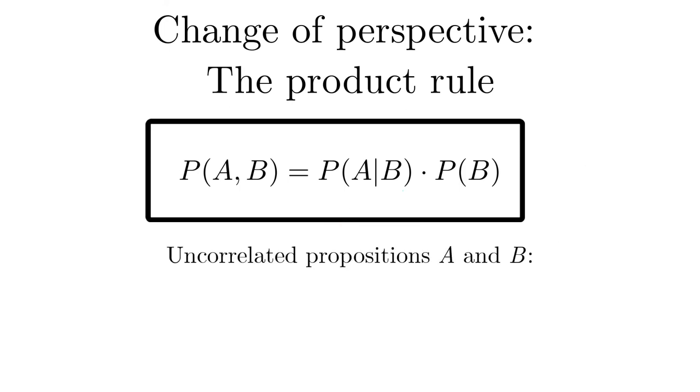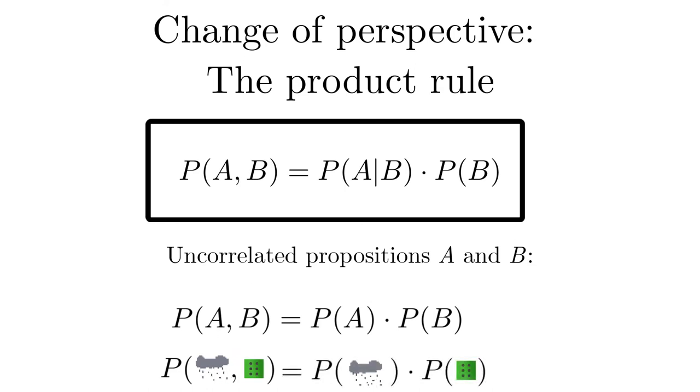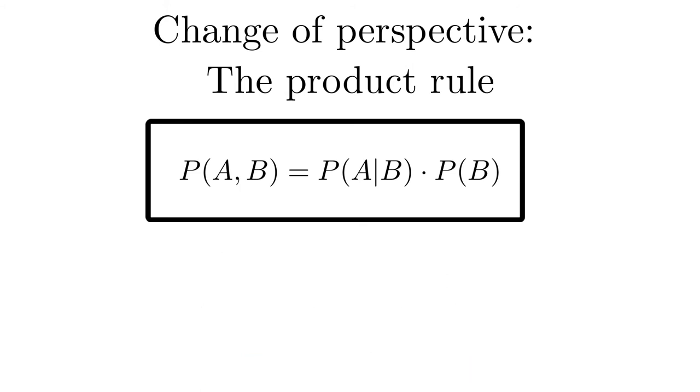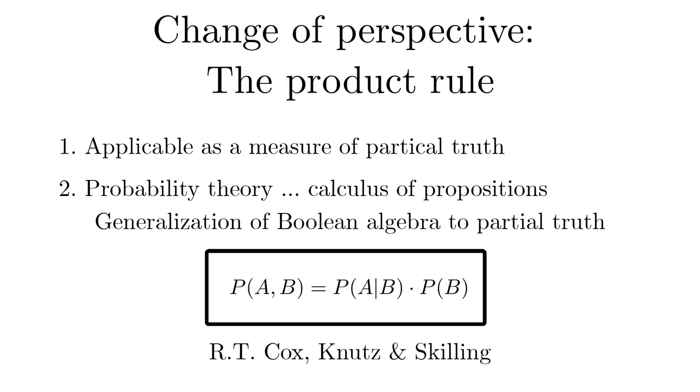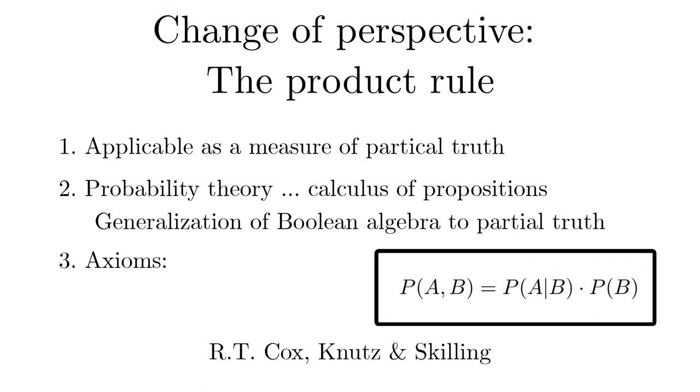Note that for uncorrelated propositions a and b, the product rule simplifies, like the probability for rain and rolling six pips on a die is equal to the product of the two probabilities. It was a long and winding road in the history of science until this general form could be proven rigorously. It is applicable to the most general definition of probability as a measure for the truth of a proposition. Then probability theory can be considered as calculus of propositions and is a seamless generalization of Boolean algebra to partial truth. The only axioms this calculus is based on are consistency, which means one gets the same result no matter along which path a calculation is performed, and continuity with respect to small changes of parameters.